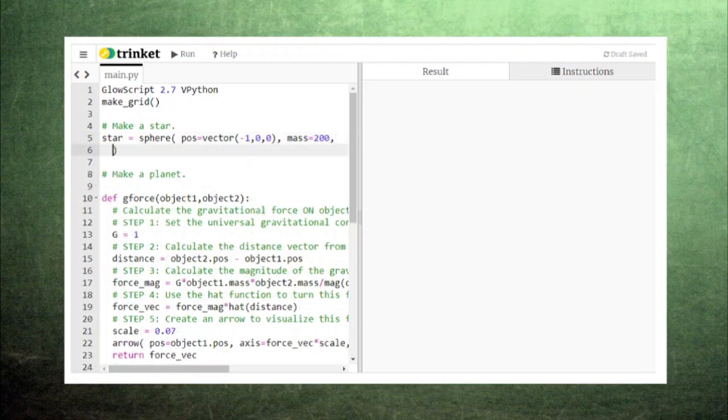Next, we need to give each sphere a mass, since mass is used in calculating the force of gravity. Next, we need to provide a radius. This radius will specify the size of each sphere in the window, although it won't affect any of the physics calculations. Finally, we need to give each sphere a color. Let's make the star yellow.